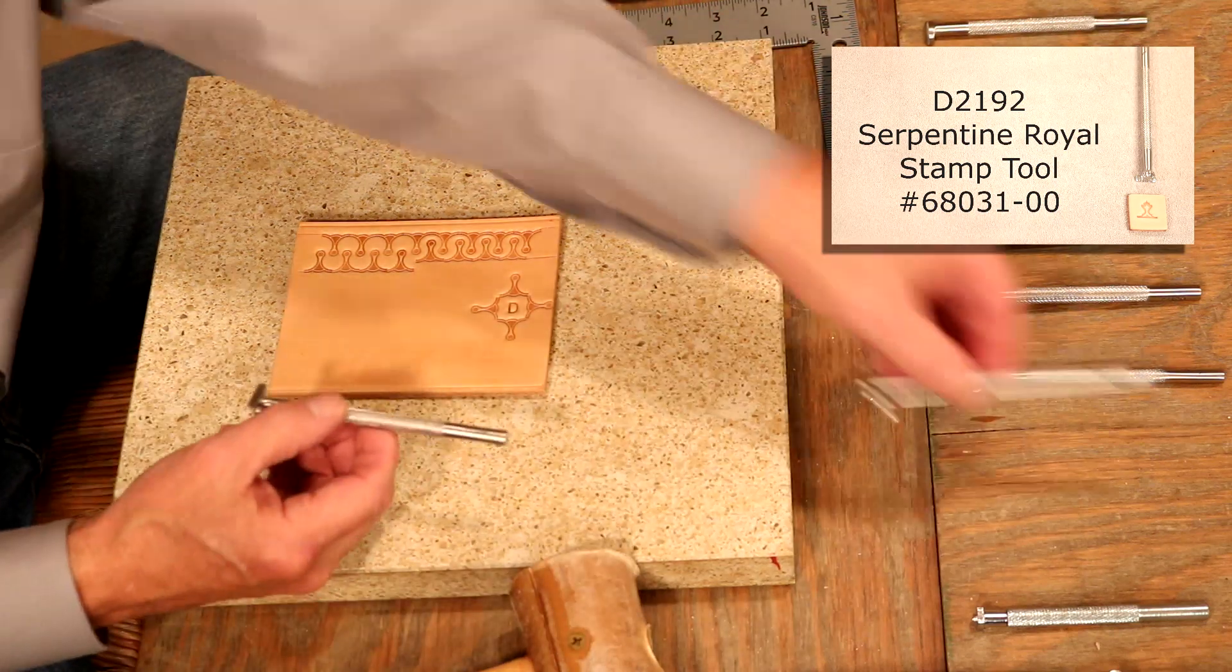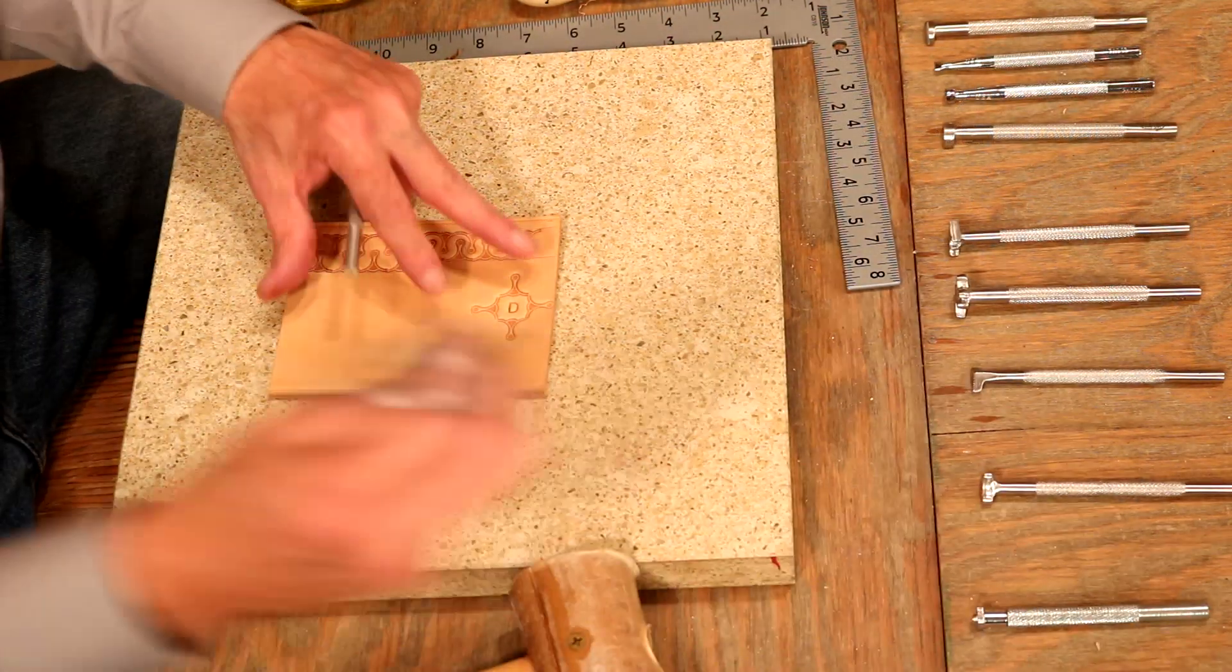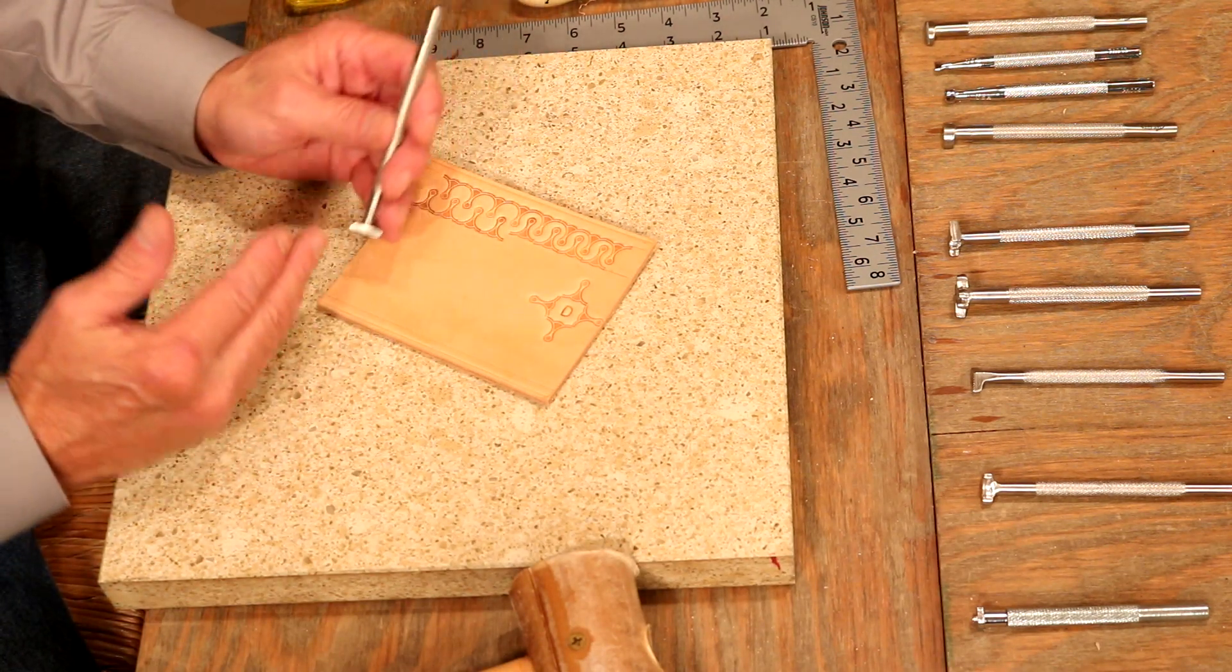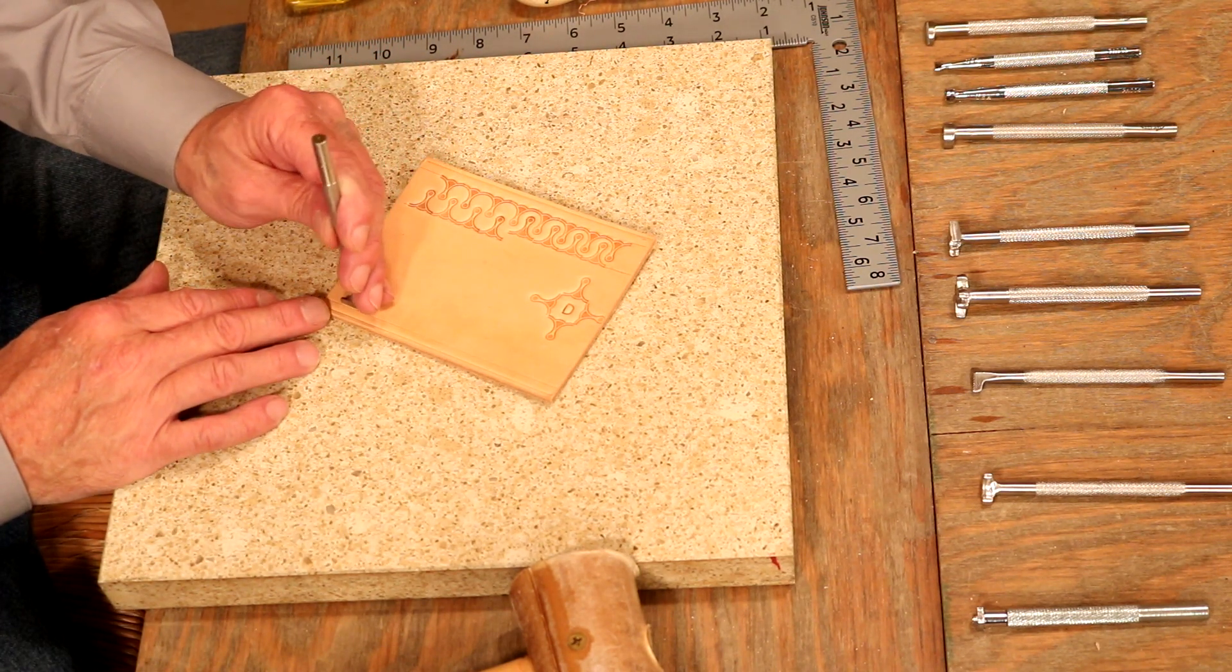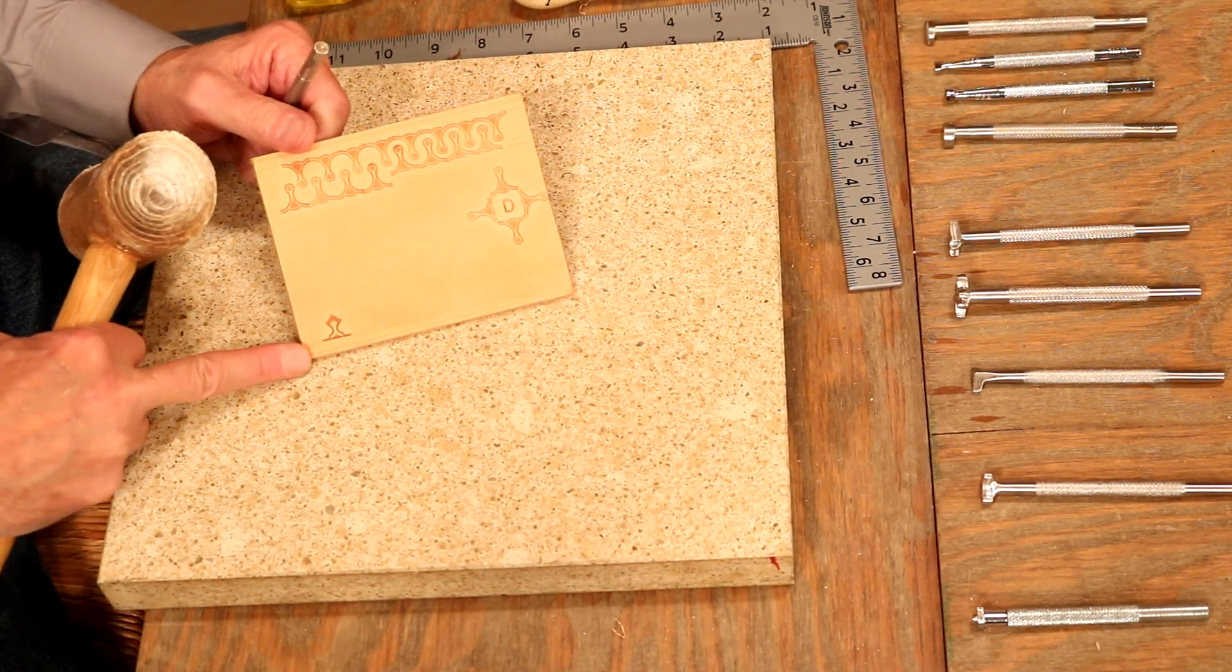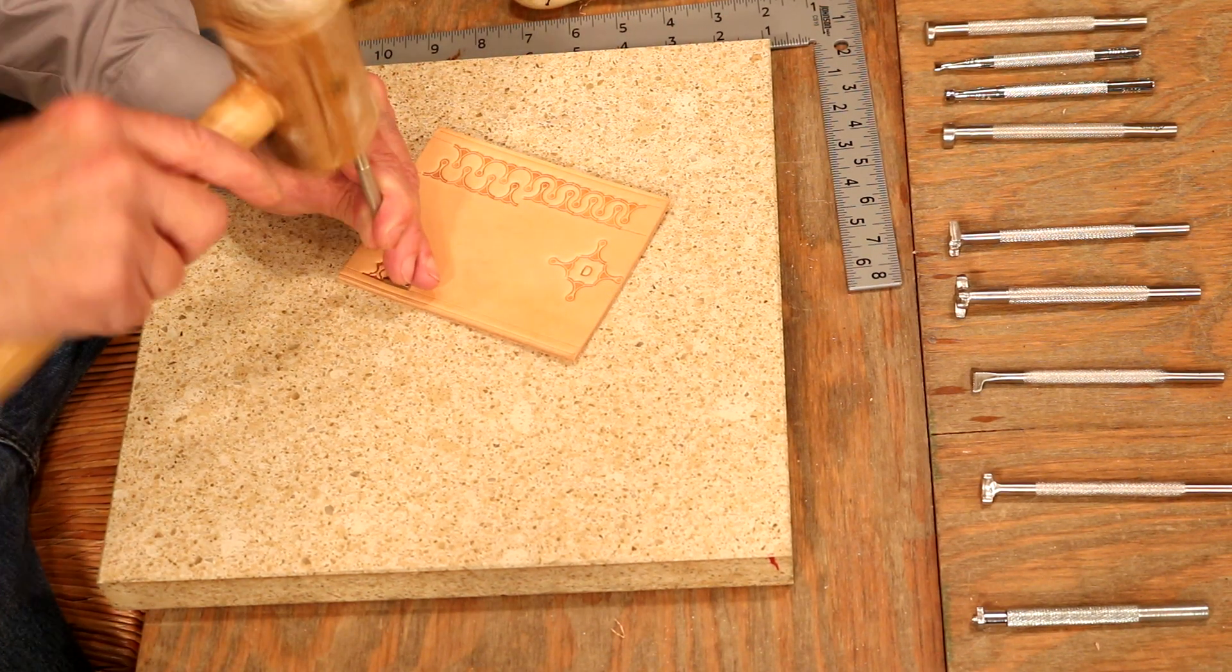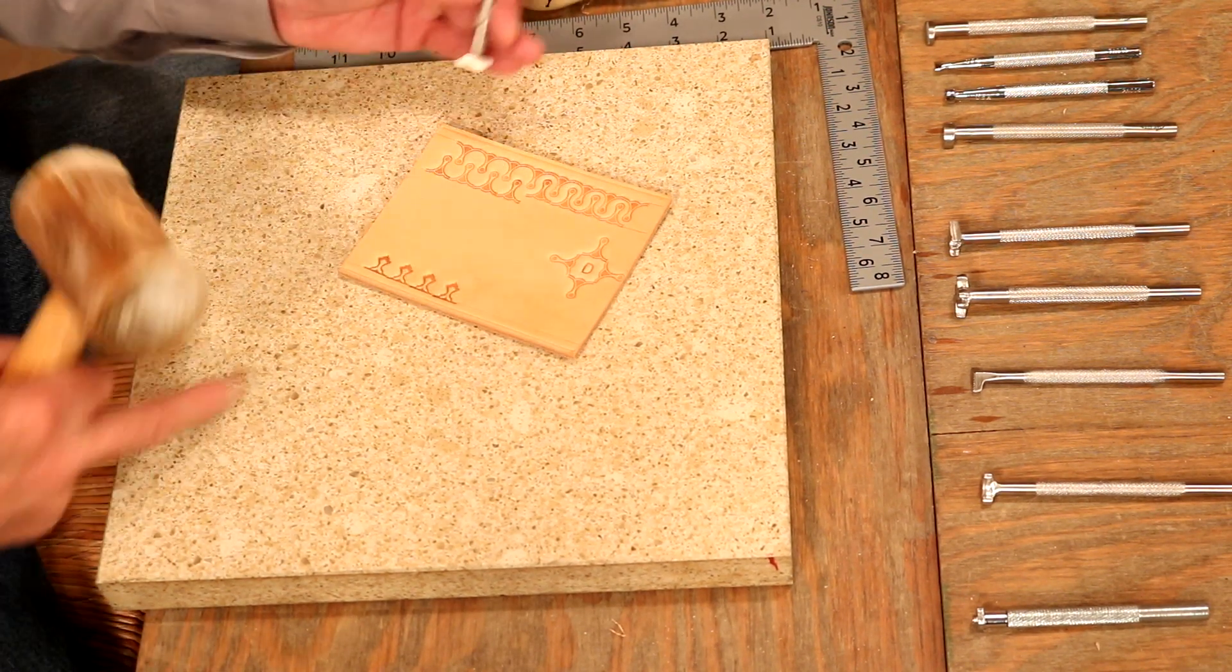Alright. Let's step over to what's called a serpentine royal. A lot more detail on this stamp. So let's drop in our guideline. And again, let's take our time on this one. In fact, the more time we take, the better this is going to look. Consistency. Again, that's what we're aiming for. Nice, crisp stamp. Let's do a few more.